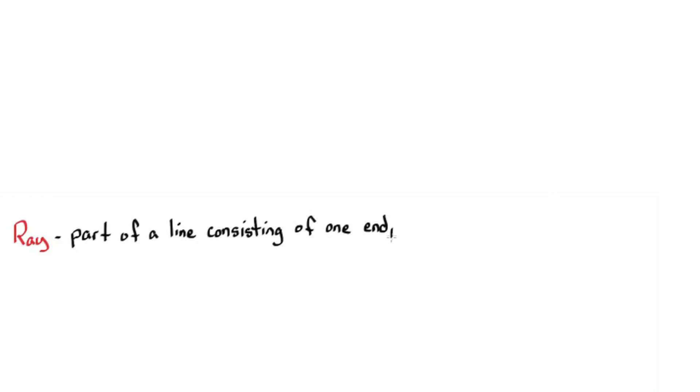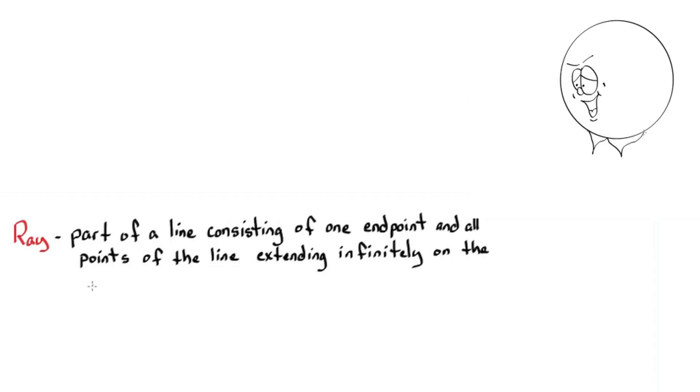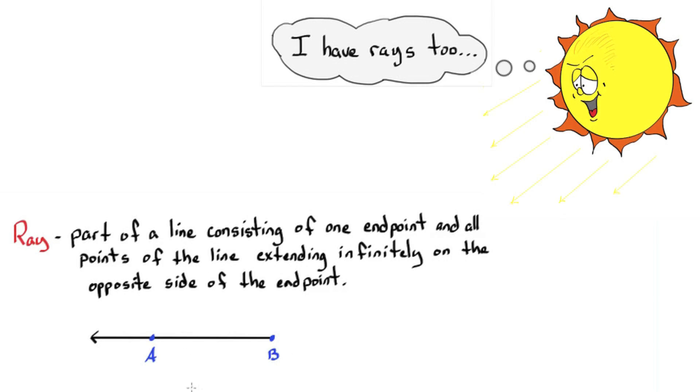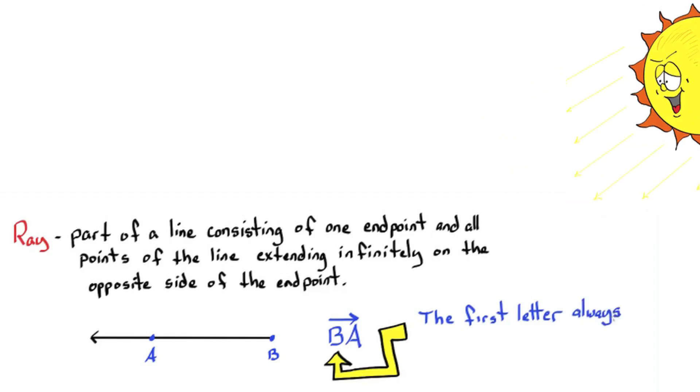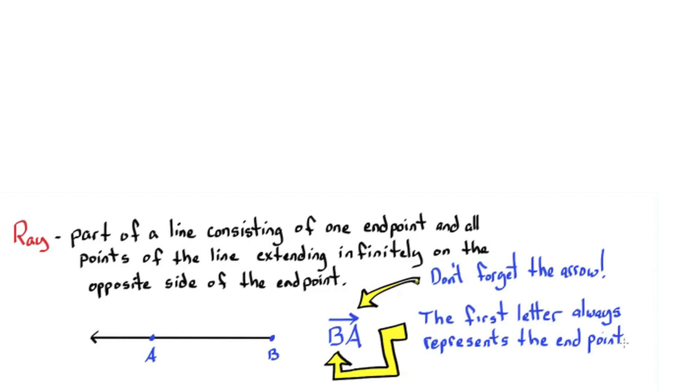Ray. Part of a line consisting of one endpoint and all points of the line extending infinitely on the opposite side of the endpoint. Here we have ray BA. The first letter always represents the endpoint. Don't forget the arrow.